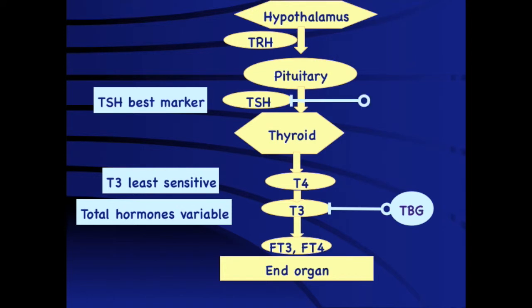There are important hormonal crosstalks to be aware of. The alpha unit of TSH has similarity to the FSH receptor, so in situations of very high TSH levels, it may act on the FSH receptor causing stimulation and resulting in precocious puberty. This unique form of precocious puberty in untreated girls with hypothyroidism is associated with delayed bone age and short stature.